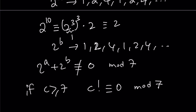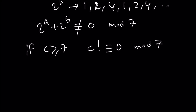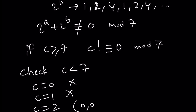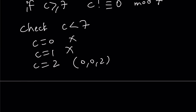That gives us an upper bound — we only need to check c values less than 7. For c=0 we found no solutions, and for c=1 there are also no solutions. For c=2 we found the solution (0, 0, 2).